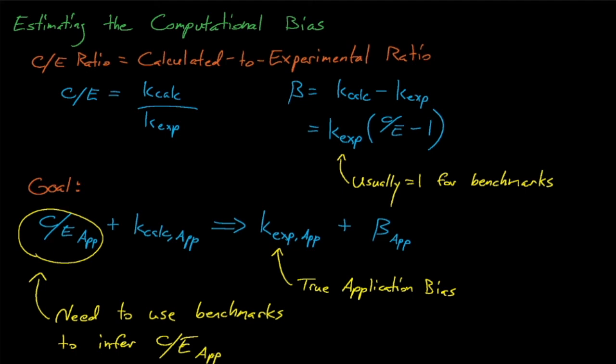If our target application and our benchmarks share the same sources of nuclear data induced uncertainty, and this data uncertainty drives why the C over E's do not equal 1, then our target application is likely to have a C over E that's similar to the C over E for similar benchmark experiments.